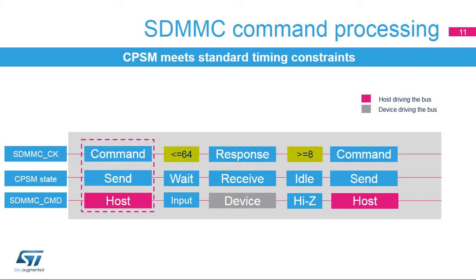Once the SDMMC ARG and SDMMC CMD registers are programmed with CMD index, WAIT_RESP equals 01 or 11, and CPSMEN equals 1, the CPSM moves from idle to send state and the host starts driving the SDMMC CMD line to send the command to the card. If the CPSM is programmed to wait for a response (WAIT_RESP equals 01, 10, or 11), it enters the wait state and the command timer starts running. If the card doesn't respond within the maximum NCR time, the timeout flag is set and the CPSM returns to idle state. When no response is programmed (WAIT_RESP equals 00), the CPSM returns to idle state.